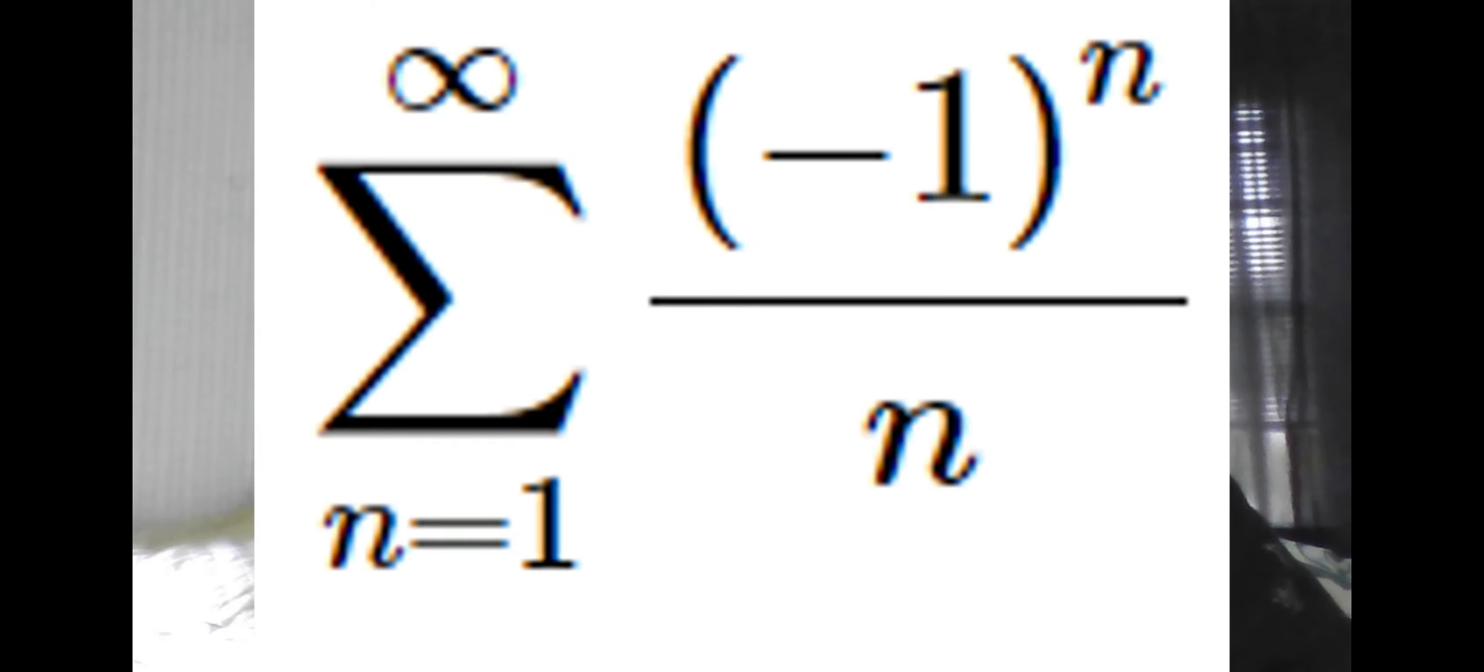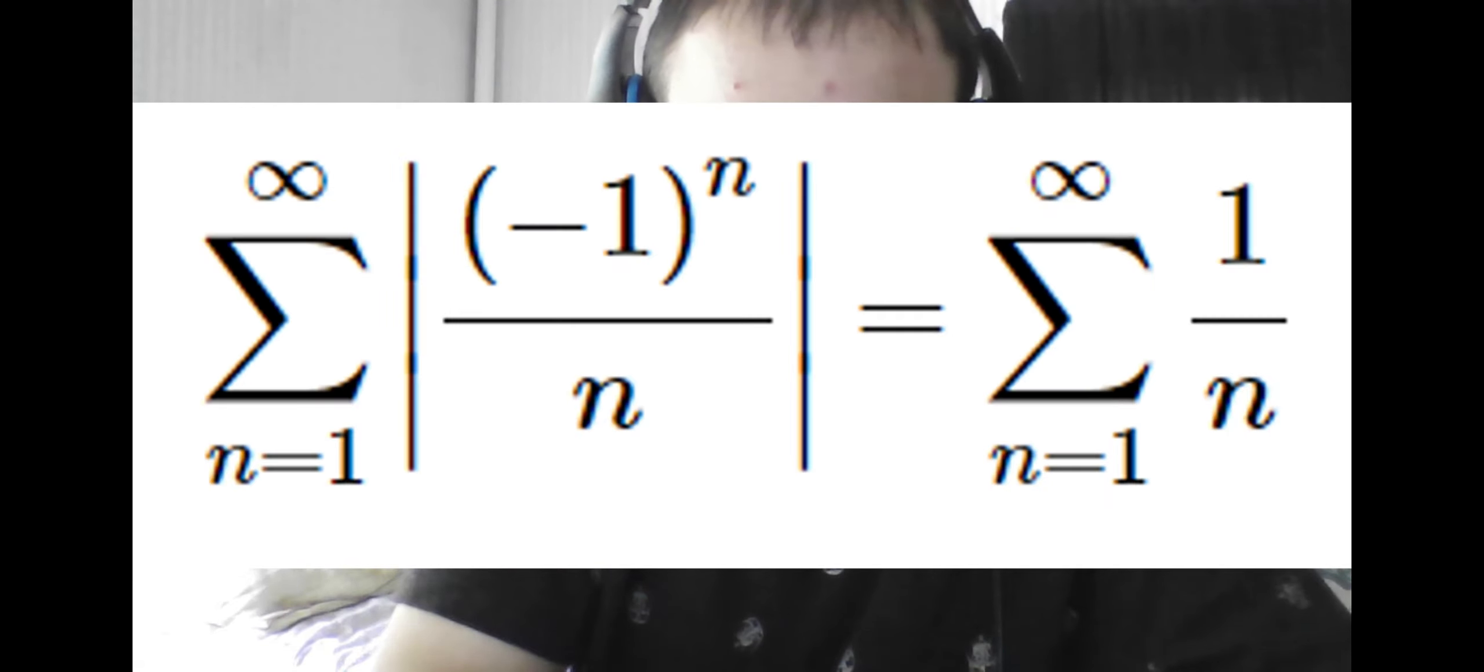For example, if we are told to figure out if the limit of the sum of this function is absolutely convergent, we would do this by putting absolute value bars around the function, seeing that the absolute value of the numerator is simply 1, and the absolute value of n is simply n. So now we have this series, which we know is divergent. So we have seen it does not have absolute convergence,